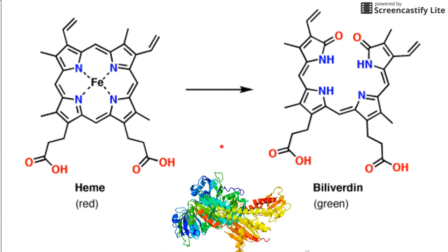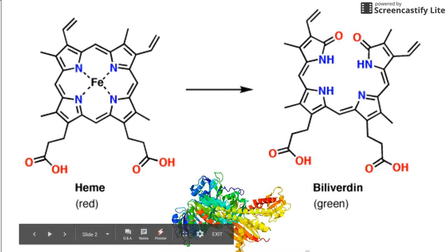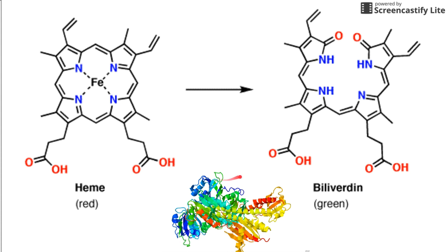This is the protein in question, the phytochrome protein. Basically, this paper is about how this protein functions when we take biliverdin out of the picture.